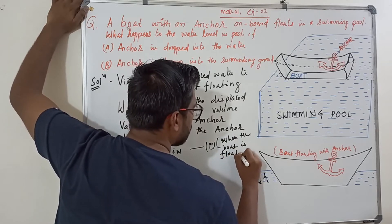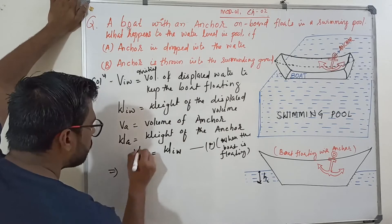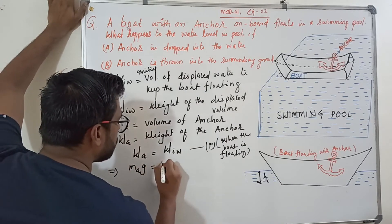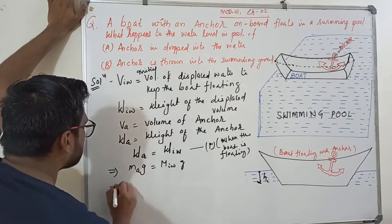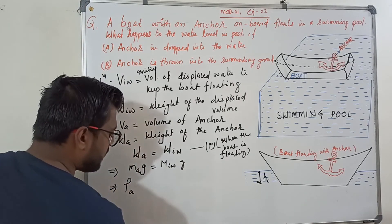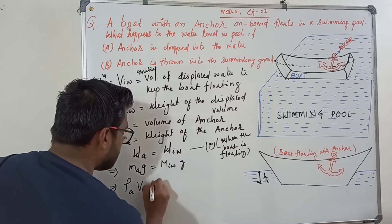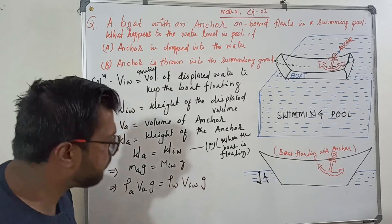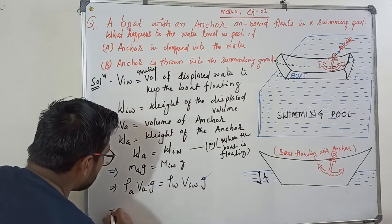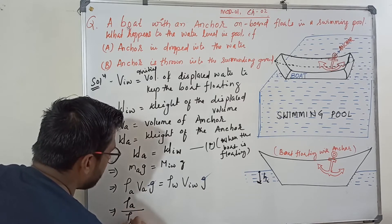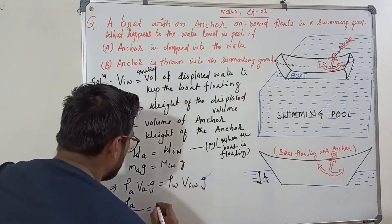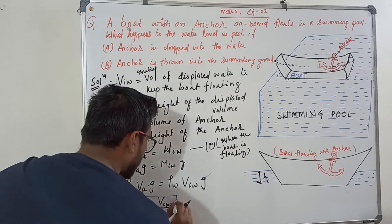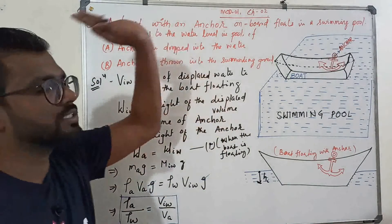Now this implies: weight equals mass times gravity, so m_a × g = m_iw × g. Expanding using densities: density_anchor × volume_anchor × g = density_water × volume_water_displaced × g. Cancelling g from both sides, we get: density_anchor / density_water = volume_water_displaced / volume_anchor. This is the key equation we need.